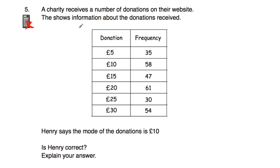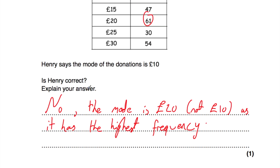Question number five. A charity receives donations on their website. The table shows 35 times they received £5, on 58 occasions £10, and so on. Henry says the mode of the donations is £10. Is Henry correct? Looking at the frequency column, £10 occurred 58 times, but £20 occurred 61 times — that's higher. So the mode is actually £20, not £10, as it has the highest frequency. Henry is not correct.